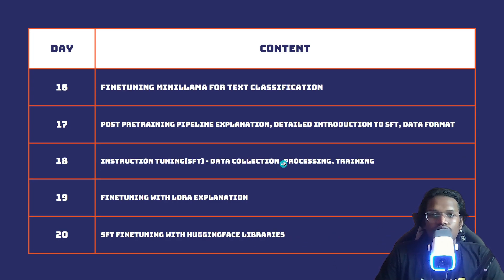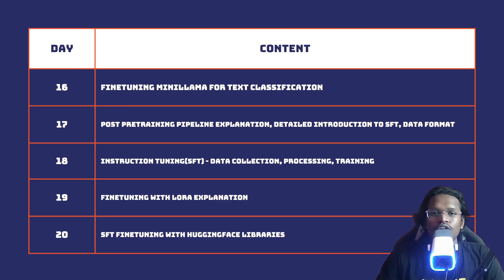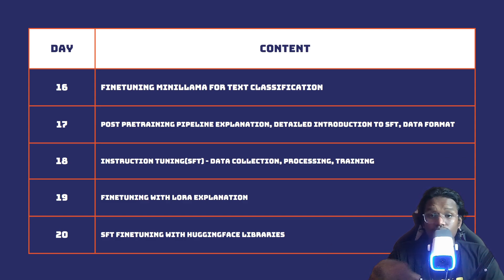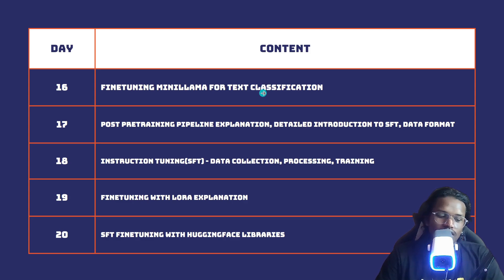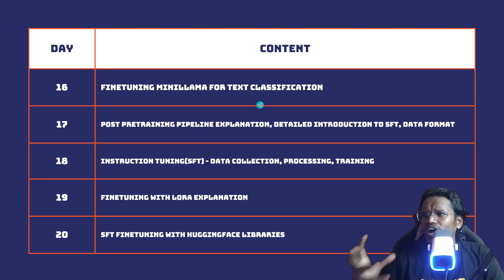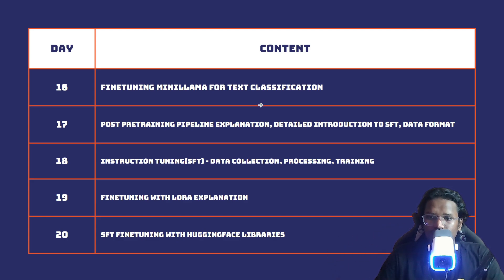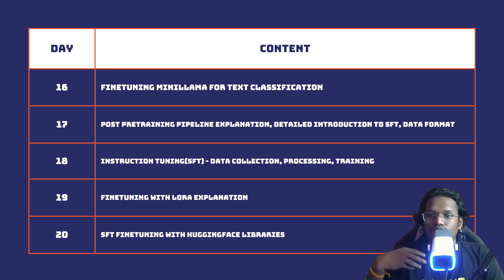In the third week we'll start with fine-tuning, because once pre-training is completed you need to fine-tune. First, the model we trained from scratch will be fine-tuned for text classification — a simple use case. Once that's done you'll understand how pre-training and fine-tuning work, but that's not the real-world scenario, since in production we usually use other models.